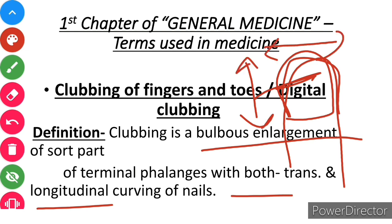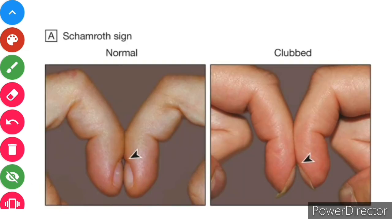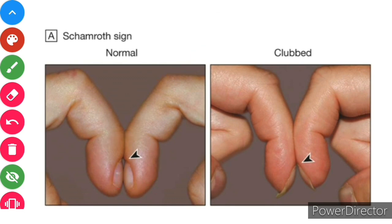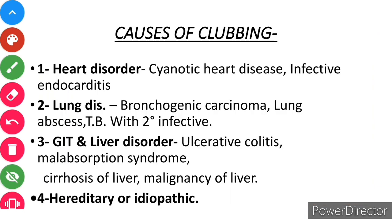Second, you have to write the Schamroth sign, which we check in the patient. When we look at normal digits, they have a diamond-shaped space between them, but in the clubbing case there is no such space — the gap is obliterated. After that, the third point you have to write is the causes of clubbing.